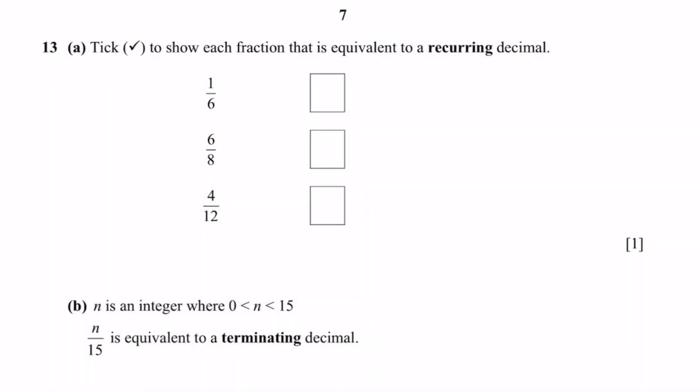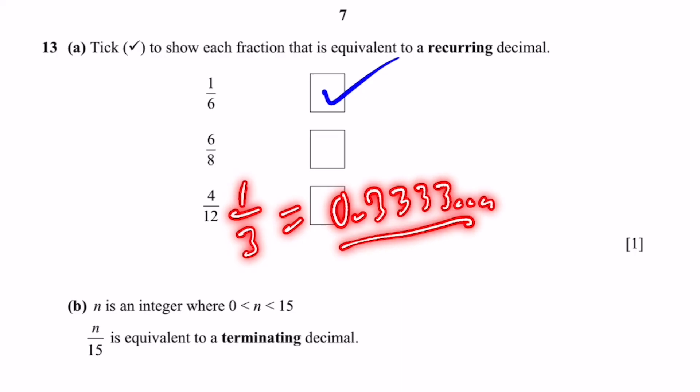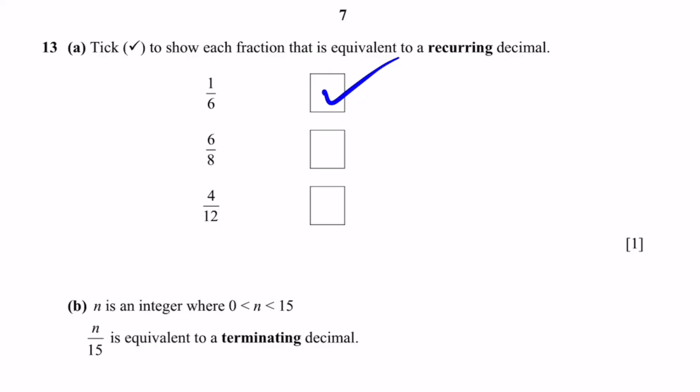Question 13 A. Tick to show each fraction that's equivalent to a recurring decimal. 1 by 6. If you did long division and kept dividing you'd actually get 0.16666 and so on. And this is recurring. 6 by 8. This is equivalent to 3 by 4 which is 0.75. It terminates so it's not recurring. 4 by 12. Same thing as 1 by 3 which if you kept dividing using long division you'd notice that it forms a pattern 0.33333 and so on. It does not stop. Therefore this is also recurring.